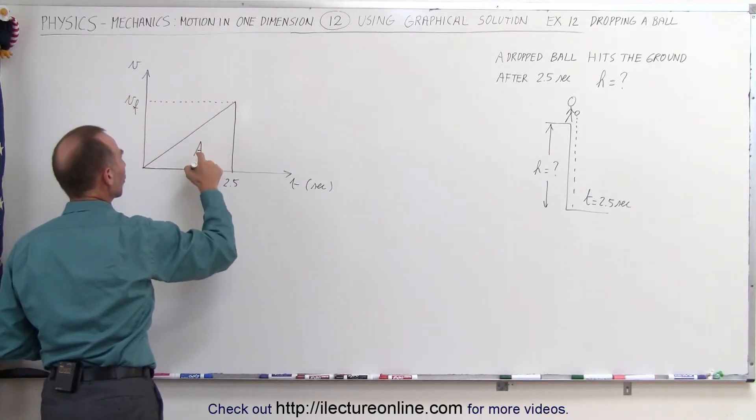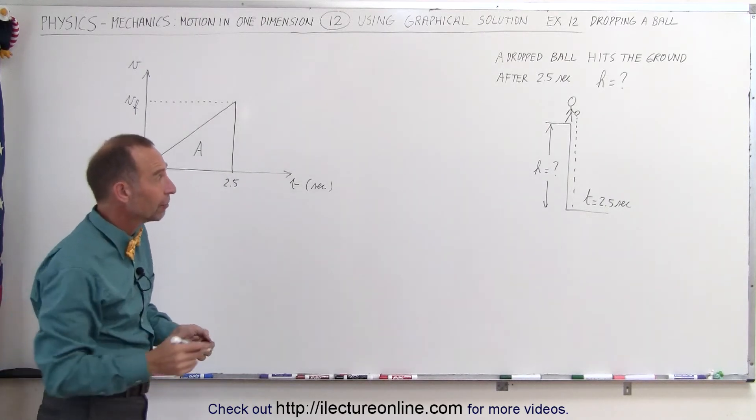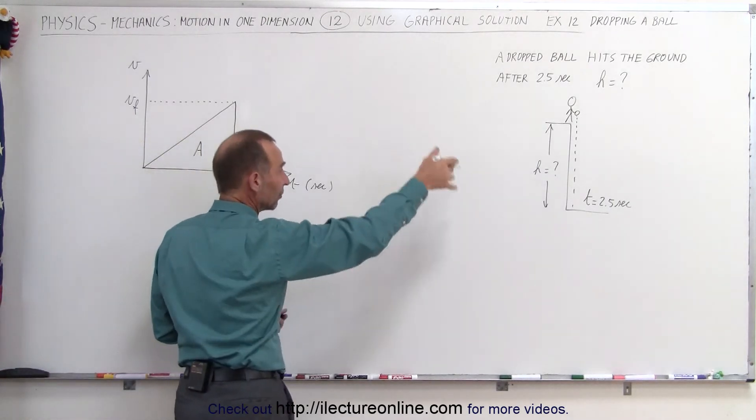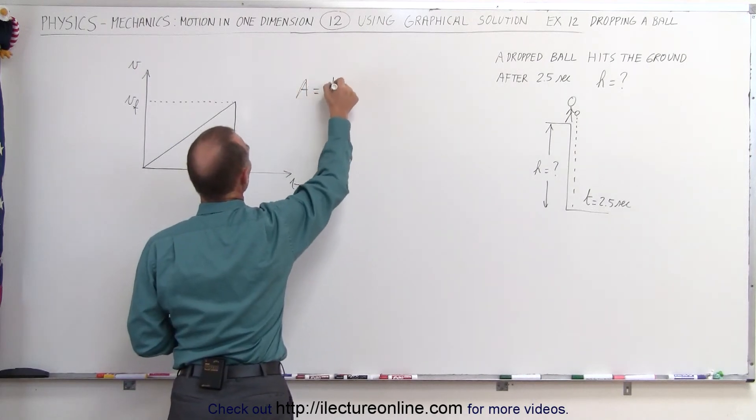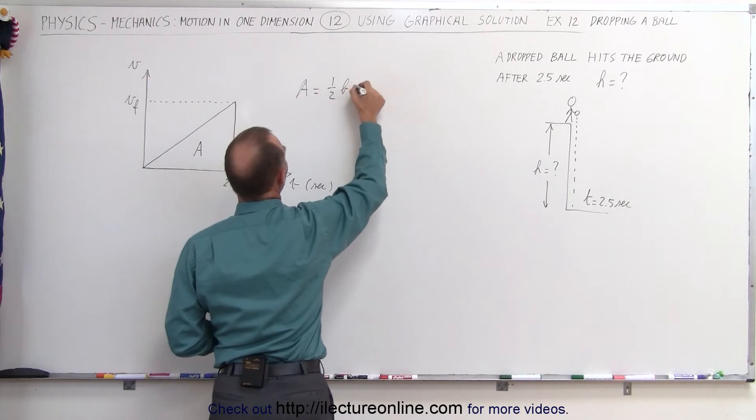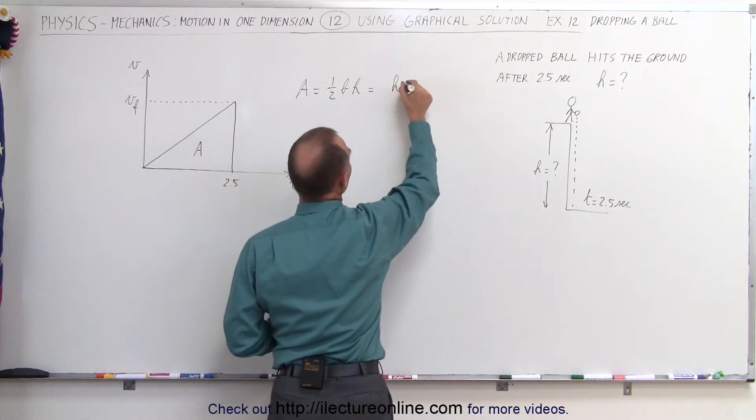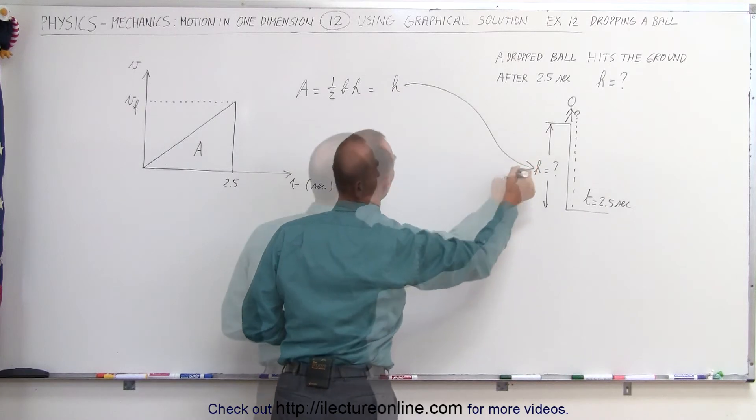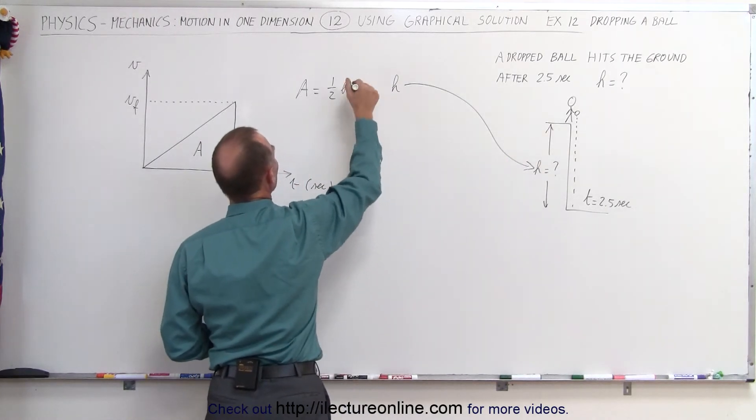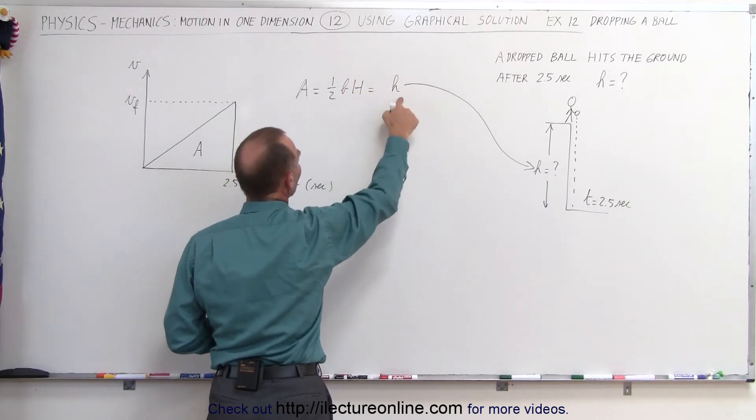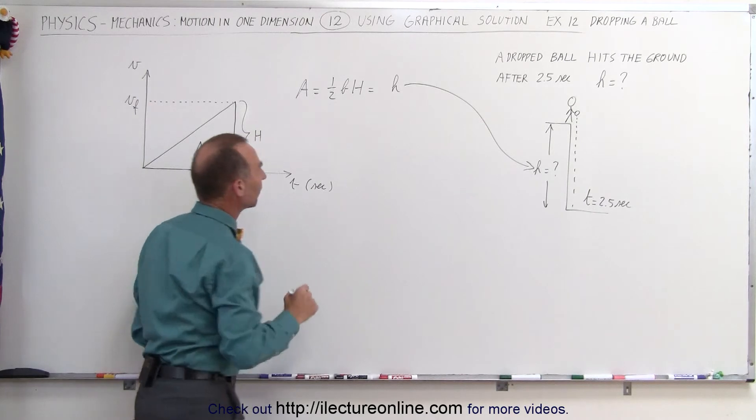And of course the area underneath that curve represents the distance traveled which would be the height of the falling ball. So the area is equal to one half the base times the height which equals the height from which the ball dropped from the top of the building. I'm going to use a different h so we don't get confused. This h is not equal to that h, this h is the height of the triangle right here.